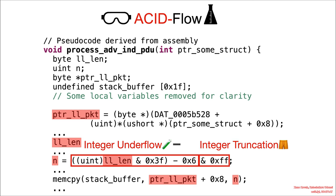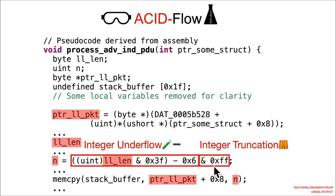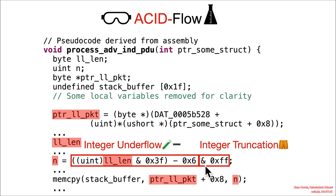But the other integer issue here is integer truncation. So whereas this as an unsigned integer would be a 32-bit value — an extremely large thing that's probably going to lead to a crash rather than successful attacker control — the integer truncation now all of a sudden takes it down to a much more reasonable single-byte value.